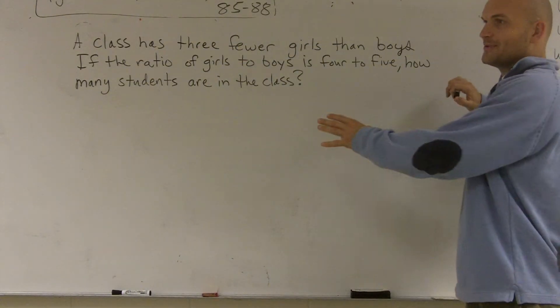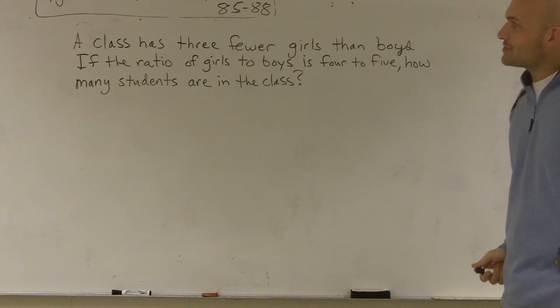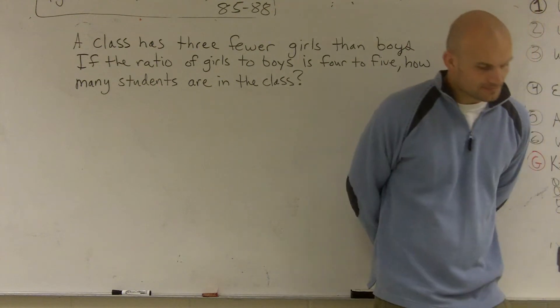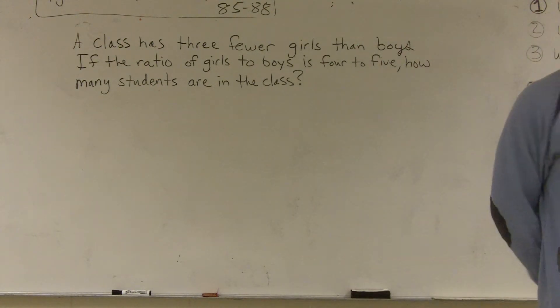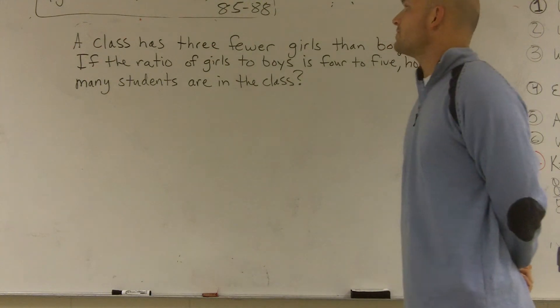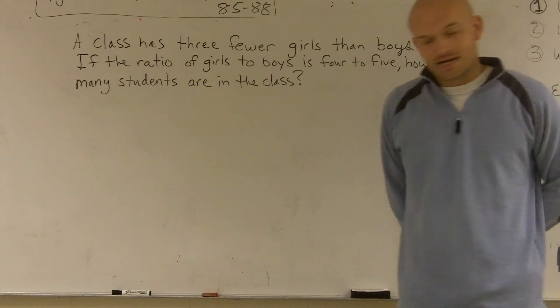I'll let this problem sink in a little bit. It says a class has three fewer girls than boys. If the ratio of girls to boys is 4 to 5, how many students are in the class? I'll say it one more time. A class has three fewer girls than boys. If the ratio of girls to boys is 4 to 5, how many students are in the class?